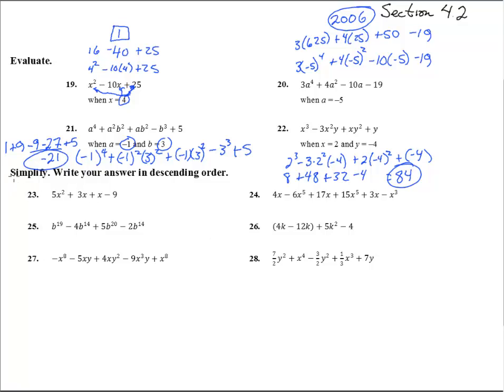On 23 through 28, it says to simplify, which really means we're just combining like terms. Write your answer in descending order, so we've got to put it so that the highest powers are first. So for simplifying, those two can go together and make 4x. So we have 5x squared plus 4x minus 9, and nothing else can be simplified and is now in descending order.